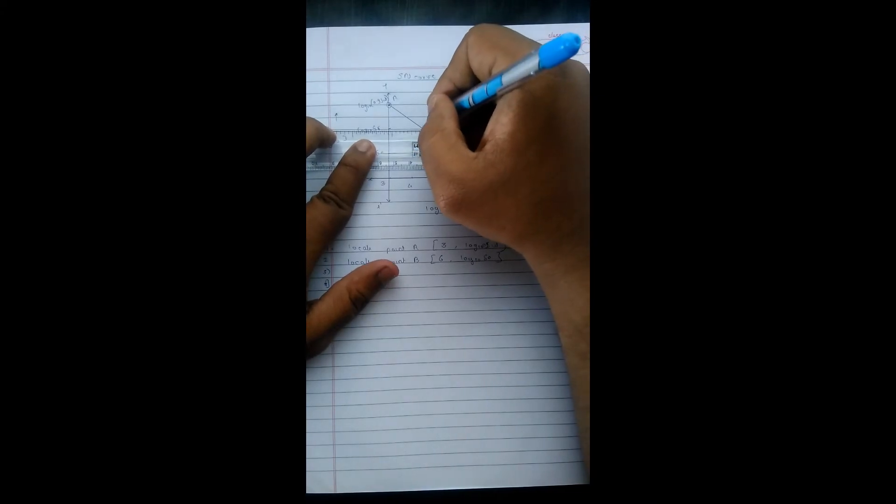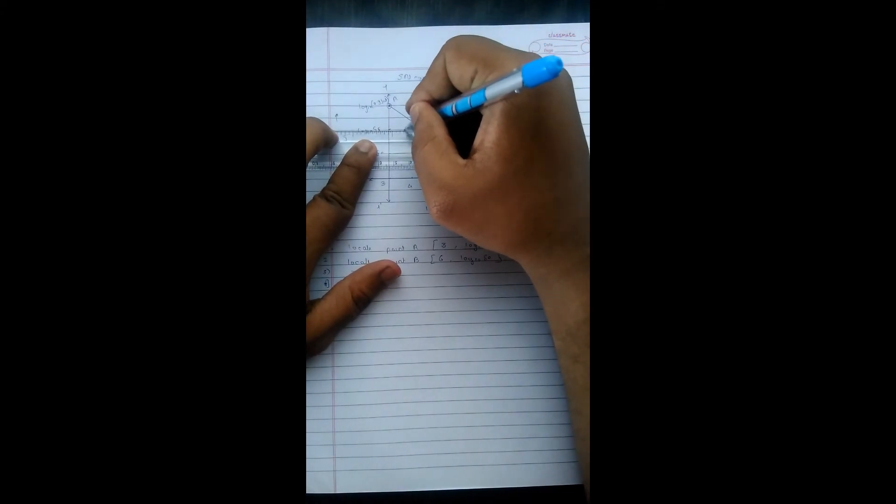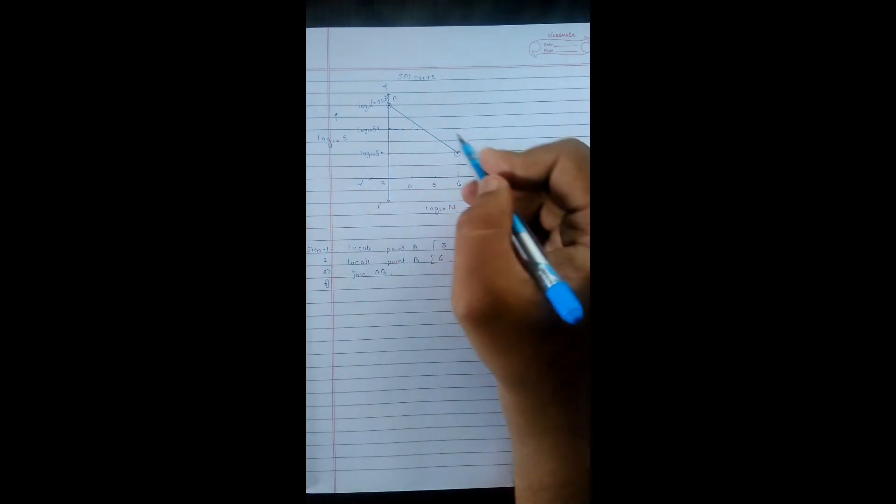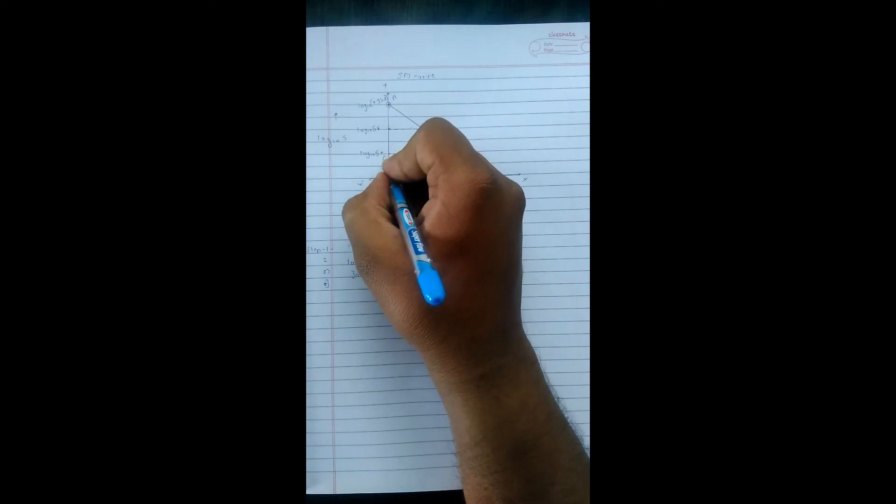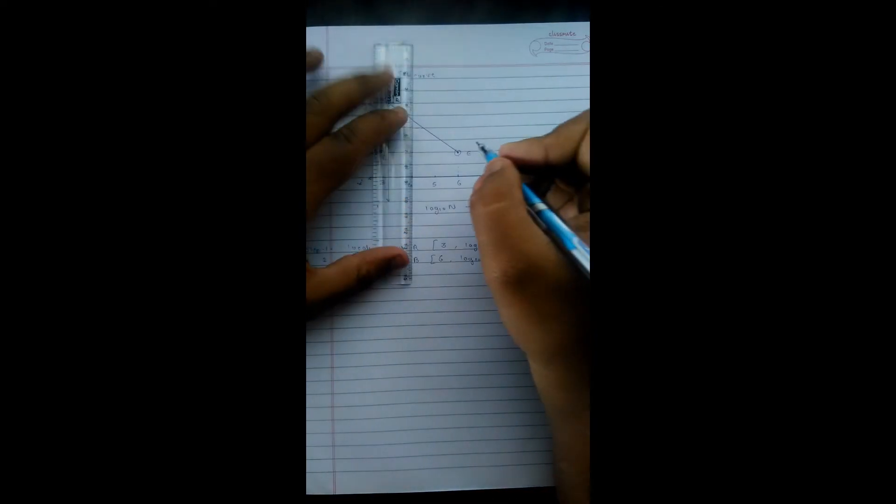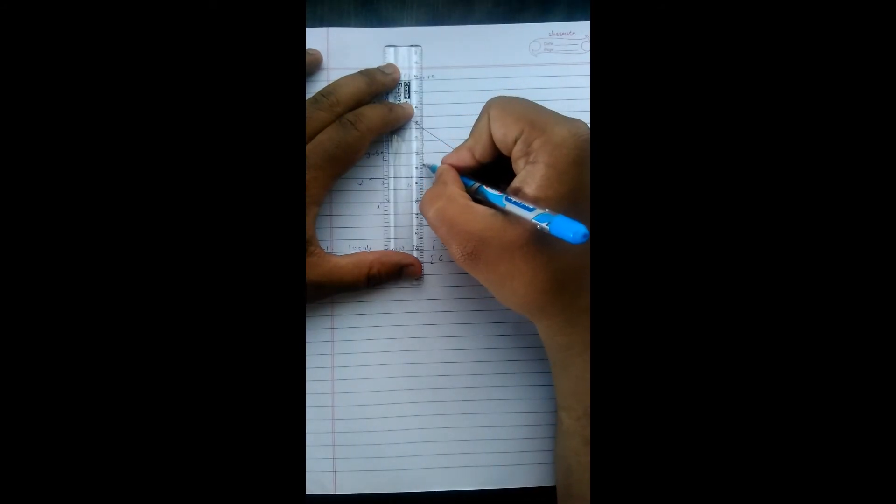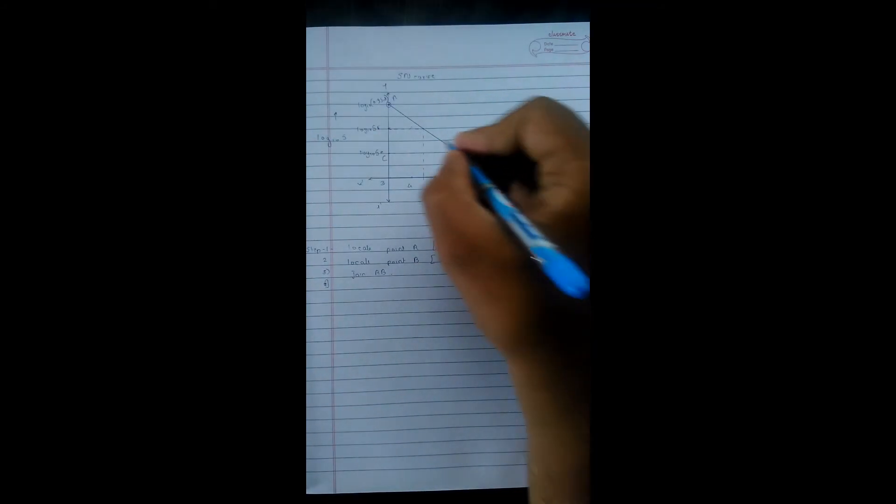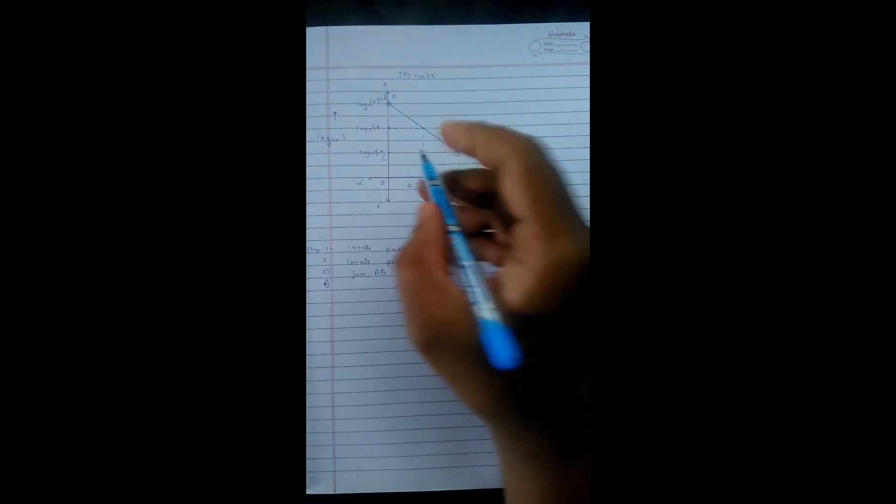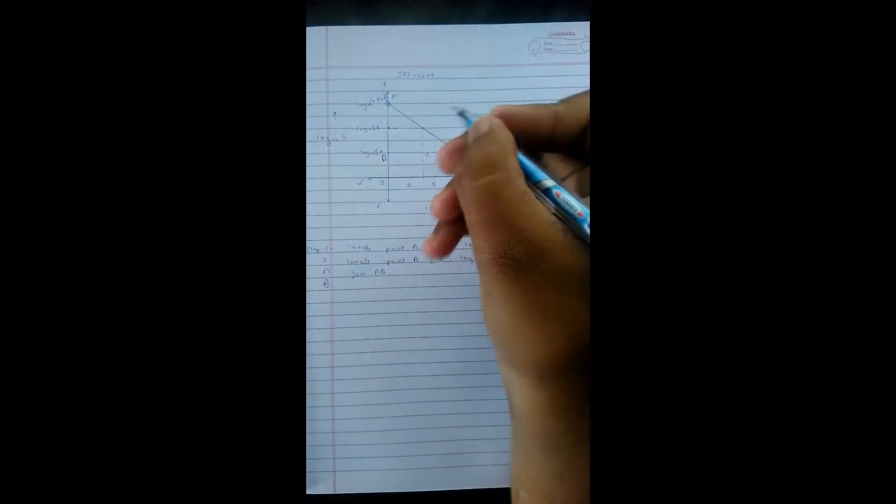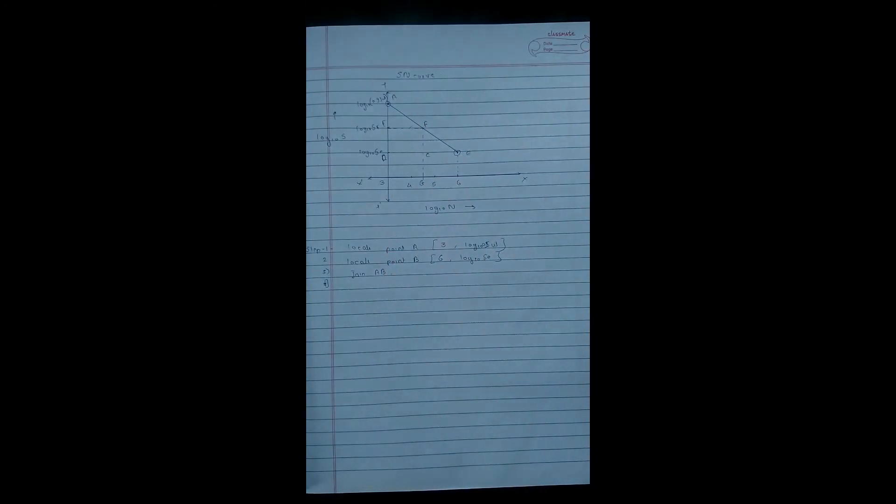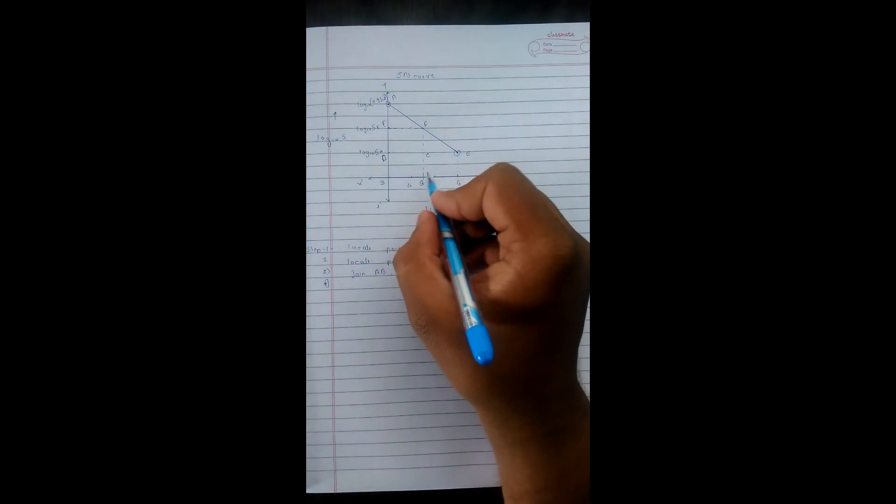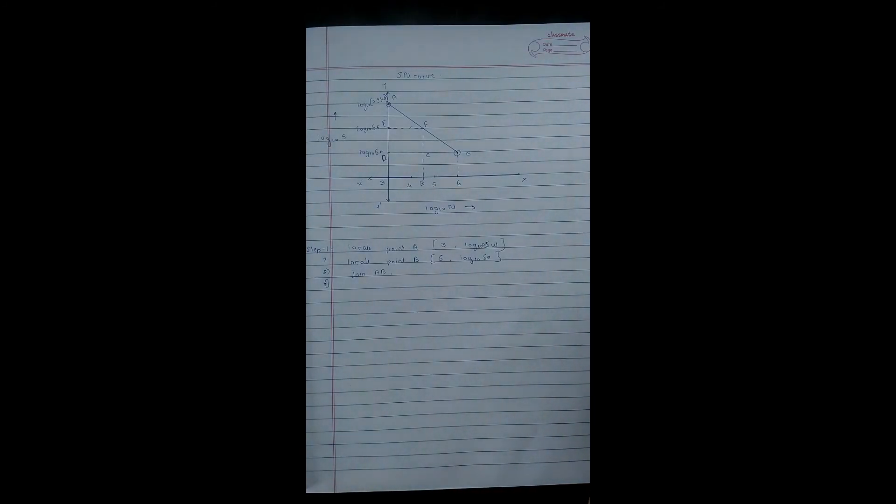So we are going to join it. And now we are going to name A, B, C, D, E, F, and G. However curve you draw, your G point must lie between 4 to 5. It's a condition which is empirical.